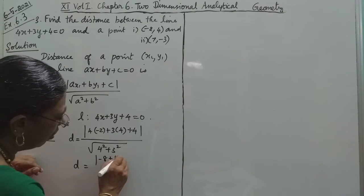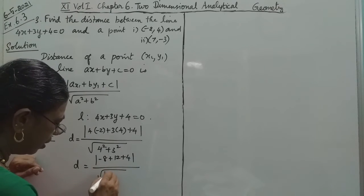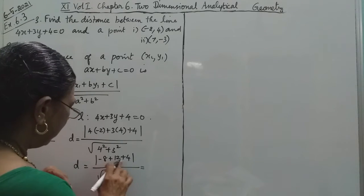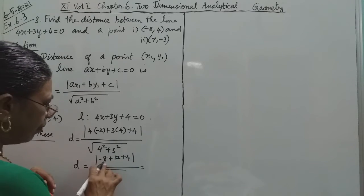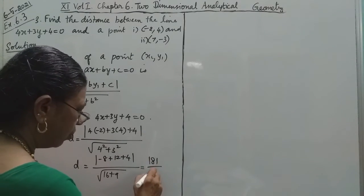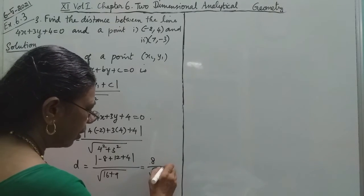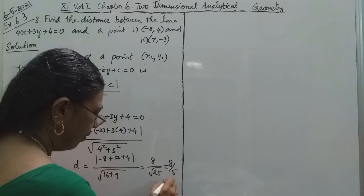Negative 8 plus 12 plus 4 equals 8, divided by the square root of 16 plus 9, which is the square root of 25. So the distance is 8 by 5 units.